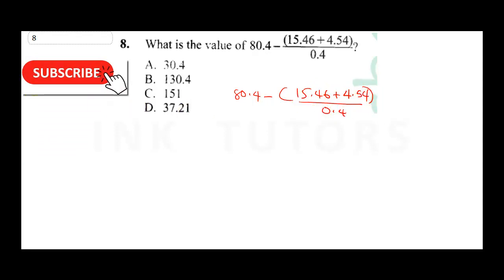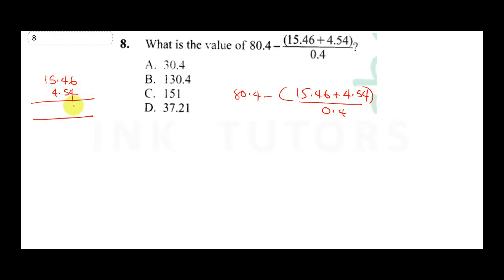The first thing I'll do is sum up what is in the bracket. We have 15.46 plus 4.54. 4 plus 6 is 0, 4 plus 5 is 9 plus 1 is 10, carry 1. 1 plus 5 is 6 plus 4 is 10, carry 1. That gives us 20. So we now have 80.4 minus 20.0 divided by 0.4.